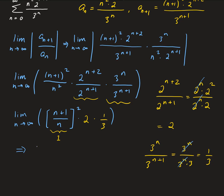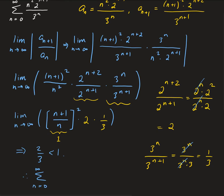So we get two thirds for our solution, and that is less than one. This tells us that the series converges absolutely.